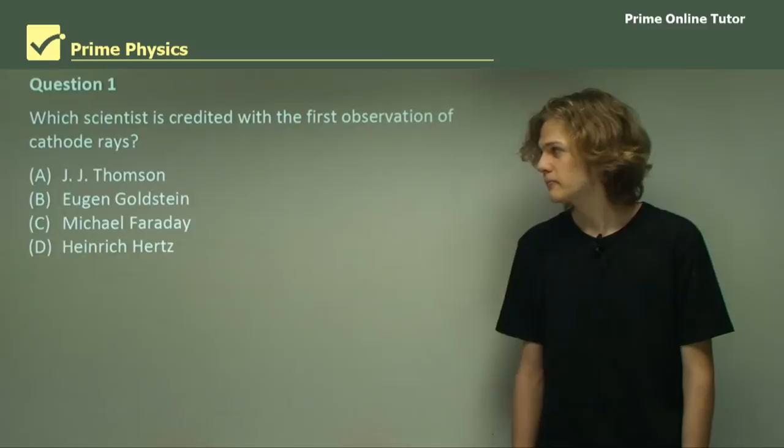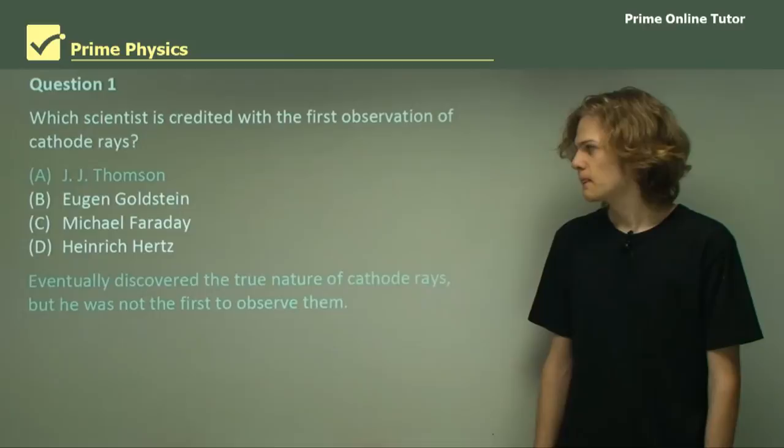Question 1. Which scientist is credited with the first observation of cathode rays? Now let's consider the options. A. J.J. Thomson.